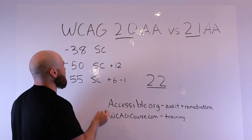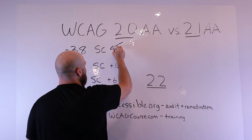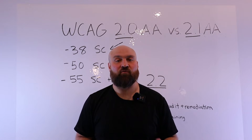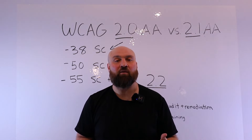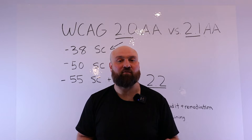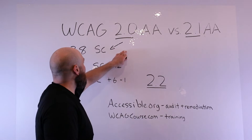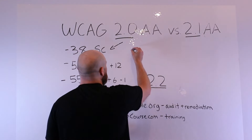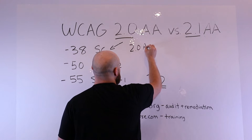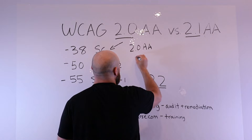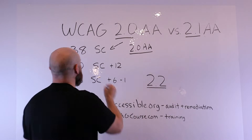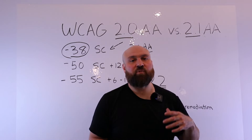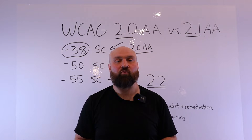What's important to know is that they're comprised of success criteria. Think of the success criteria as things to do for accessibility — there are all these different requirements to be in conformance with these technical standards. Each version has a different number of success criteria. When it comes to version 2.0 AA, there are 38 things to do, and we just need to account for those to be conformant with WCAG 2.0 AA.